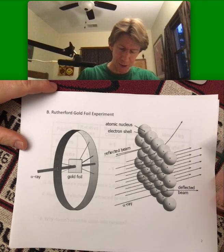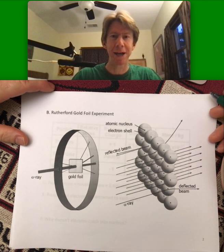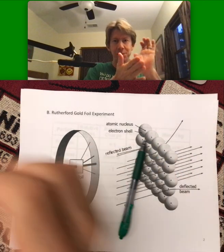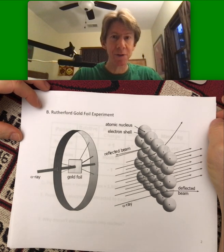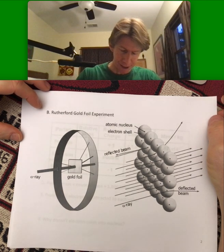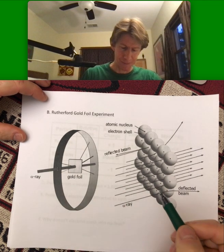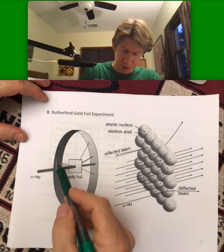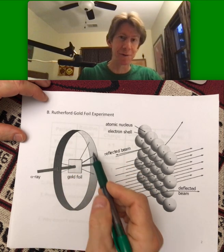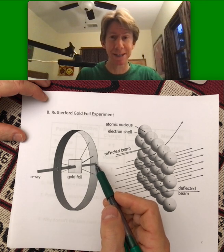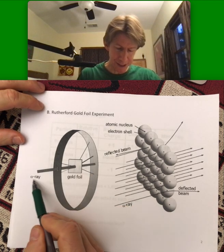This is an experiment where they took a gold foil, which can be made mere atoms thick if you pound it into very thin sheets. And it's shown here as one atom. I'm not quite sure it was that thin. And there's a screen here. This screen is basically photographic film. If something energy-like hits it, it'll light up and record it. And this is an alpha ray.